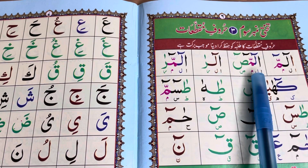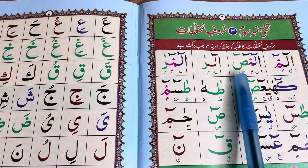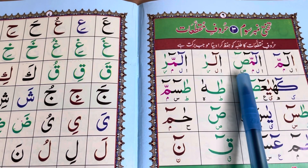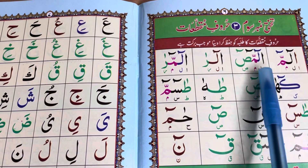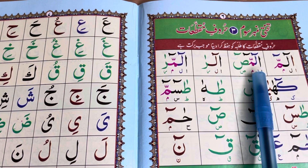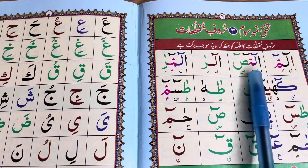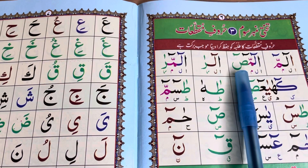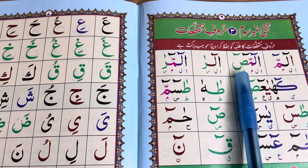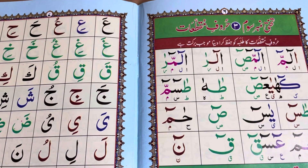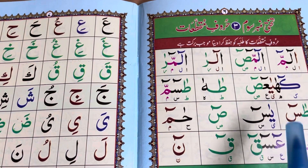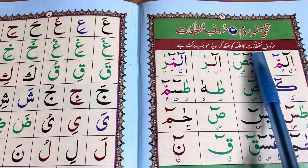Alif... Lam... Meem... Sqad. When I did Lam, I did the Mud; when I did Meem, I did the Shad, then the Mud of Meem; and when I said Sqad, I made it longer with the Mud of Sqad.